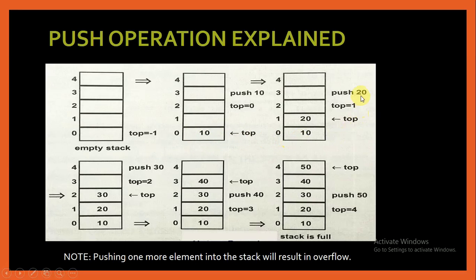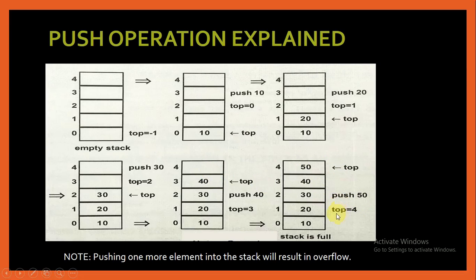If we add 20, top is incremented from 0 to 1 and 20 is inserted at index number 1. Next, pushing 30 increments top to 2 and element 30 comes at index number 2. Pushing 40 increments top to 3 and element 40 is inserted at index number 3. Pushing 50 increments top to 4 and 50 comes at index number 4. Now the stack is full; top has reached the maximum limit of the array. If we try to push one more element, it will result in stack overflow.